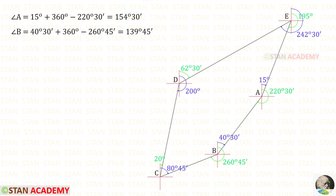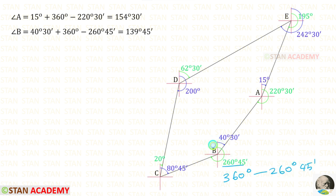Now, let us find the interior angle at station B. We know this angle is 40 degrees 30 minutes. Only we have to find this angle. We know that one circle is 360 degrees, so 360 degrees minus 260 degrees 45 minutes will give us this angle. When we add this angle and this angle, we will get the interior angle at station B, which is 139 degrees 45 minutes.